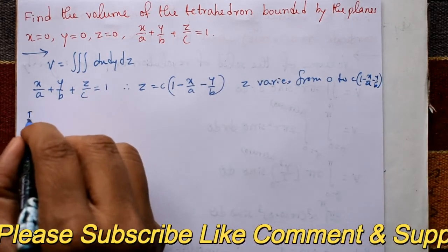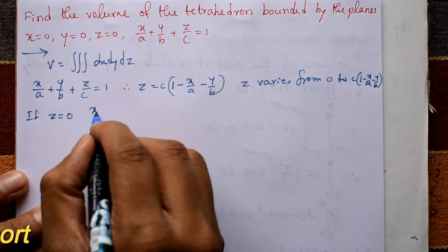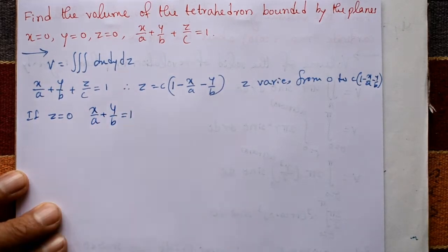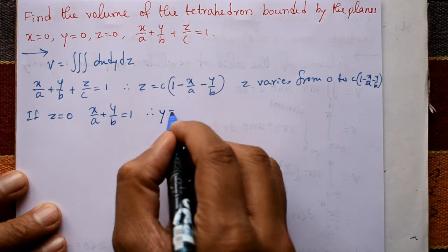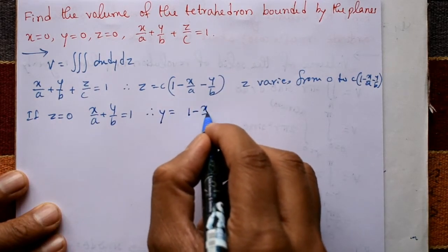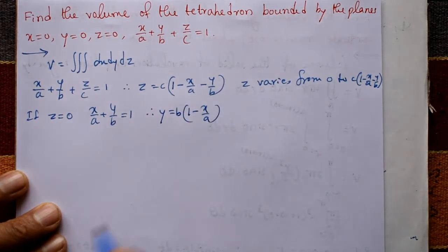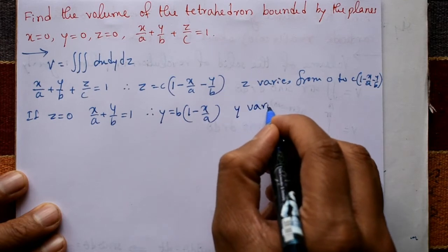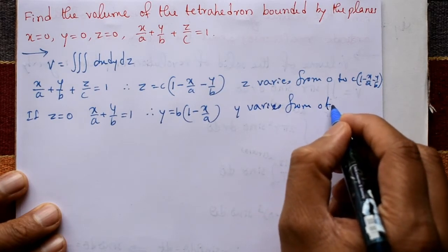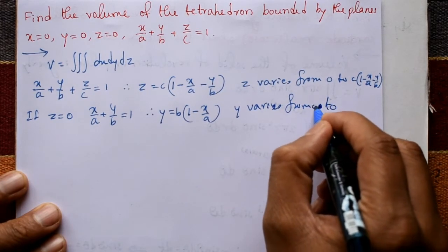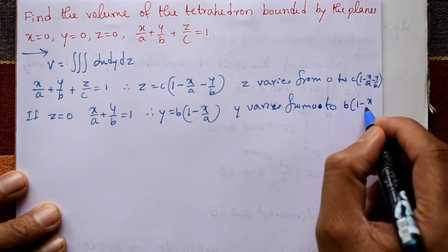Setting z = 0 in the equation gives x/a + y/b = 1. Therefore y = b(1 - x/a), and y varies from 0 to b(1 - x/a).